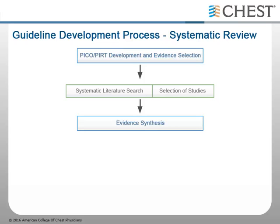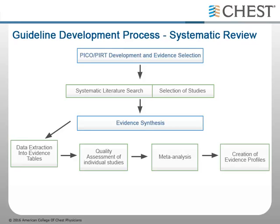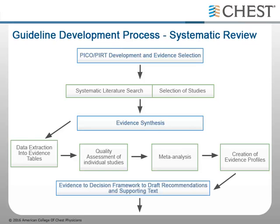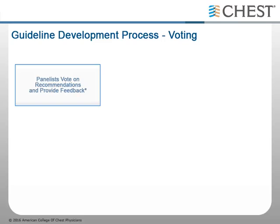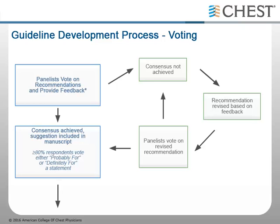The evidence is then synthesized by extracting data, assessing the quality of individual studies, conducting any possible meta-analyses, and finally creating evidence profiles. These profiles are then used to draft recommendations and supporting text of the guideline manuscript. A formal voting process is then conducted on the recommendations, which requires that at least 80% of the respondents vote that they either probably or definitely agree with the recommendation. If consensus is not achieved after the first round of voting, the recommendation is revised and the panelists vote again, a process that may be continued up to three times until consensus is achieved.